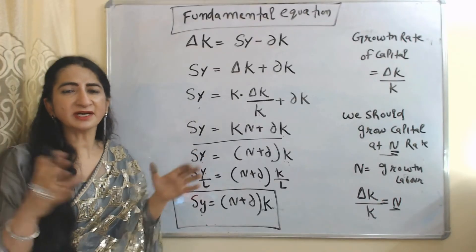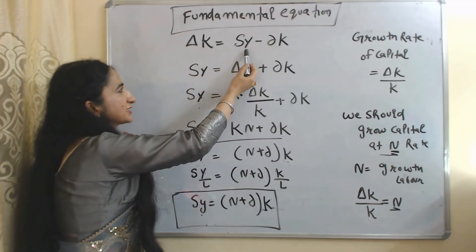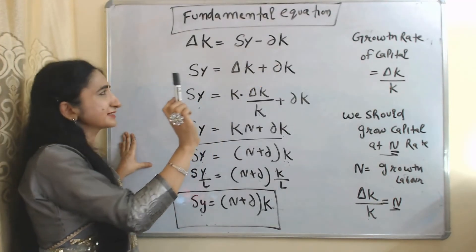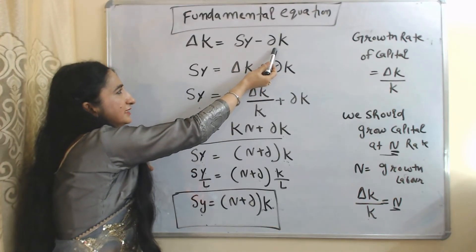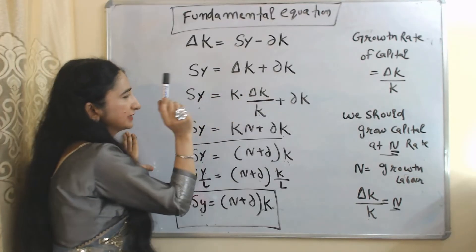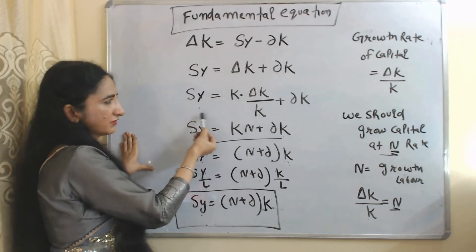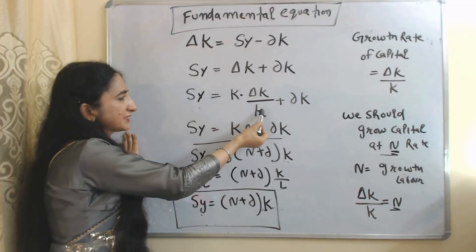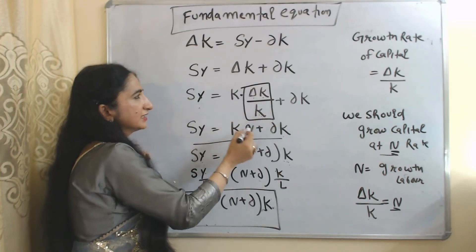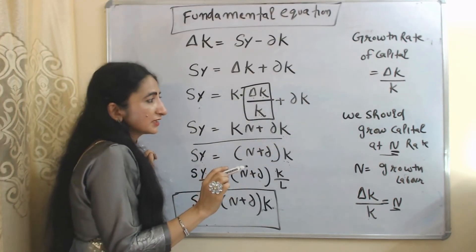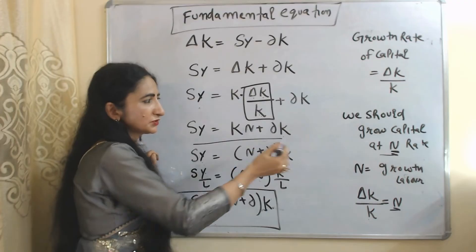Now we will see the fundamental equation of the Solow model. Change in capital equals sY minus δK, where sY is investment and δK is depreciation. We bring δK to one side, then divide and multiply the change in capital by K. Change in capital over K represents the growth rate of capital.